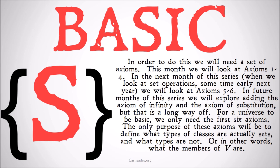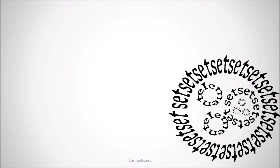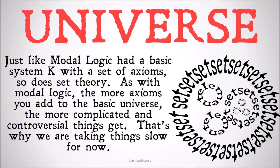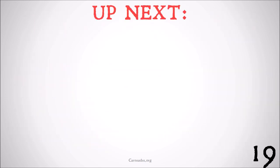And that is going to be where the axioms come in. The axioms are going to be the rules that define what is a set and what is not. Just like modal logic had a basic system K with a set of axioms, so does set theory. The more axioms you add to the basic universe, the more complicated and controversial things get — that's why we're taking things slow for now. The basic universe with the first six axioms is relatively uncontroversial, at least within this part of set class theory. Getting above that gets slightly more controversial, and we'll tackle that controversy when we get to it.